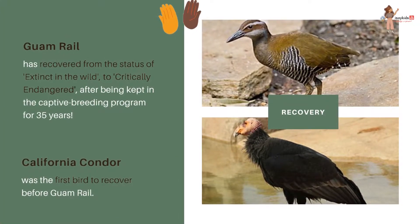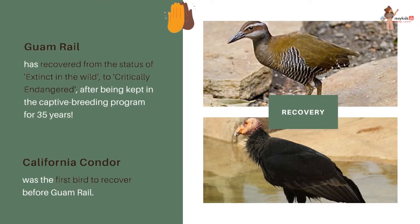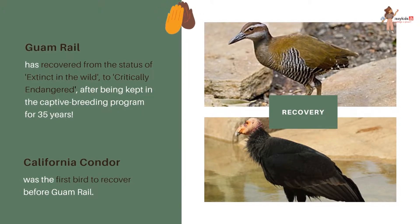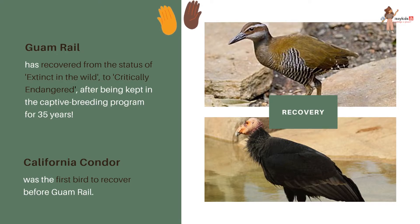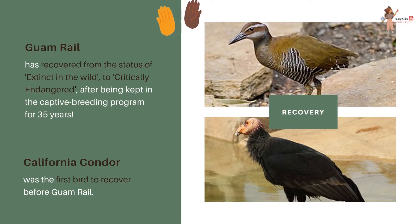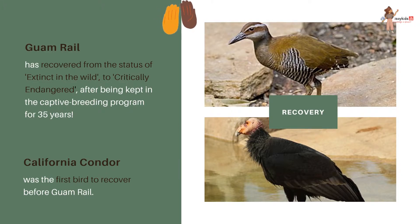The Guam rail is a species of flightless bird endemic to the United States territory of Guam. It has recovered from the status of extinct in the wild to critically endangered after being kept in a captive breeding program for 35 long years. The California condor, the largest North American land bird, was the first bird to recover before the Guam rail.